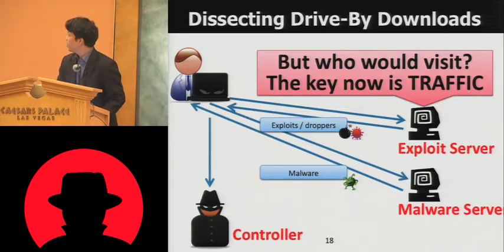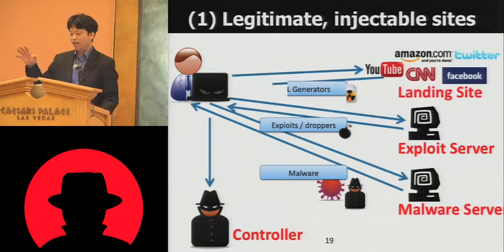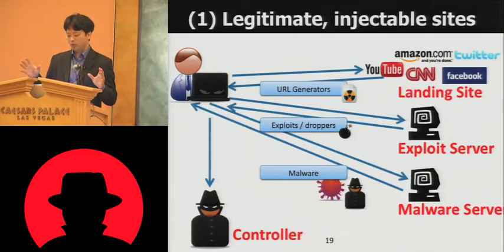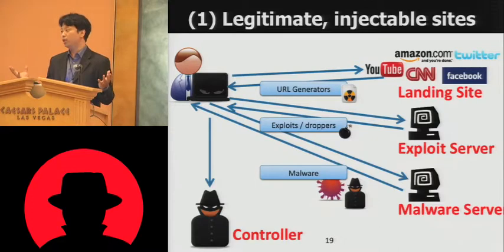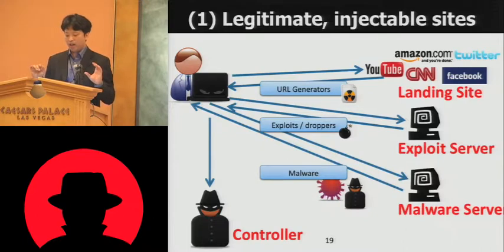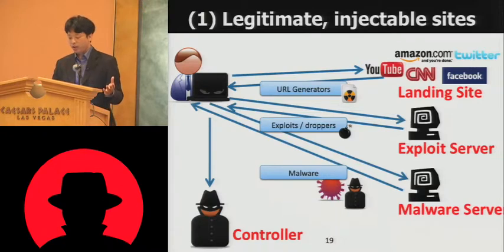So the question here is, who would visit this exploit website? The key is traffic. The attacker would go in and break into very big and popular websites with a lot of traffic — for example, YouTube, Amazon, etc. These websites would then, in their legitimate page, include a piece of JavaScript that generates URLs. We call those URL generators. The URL generators would then dynamically generate either an iframe or a JavaScript source pointing to the exploit server.